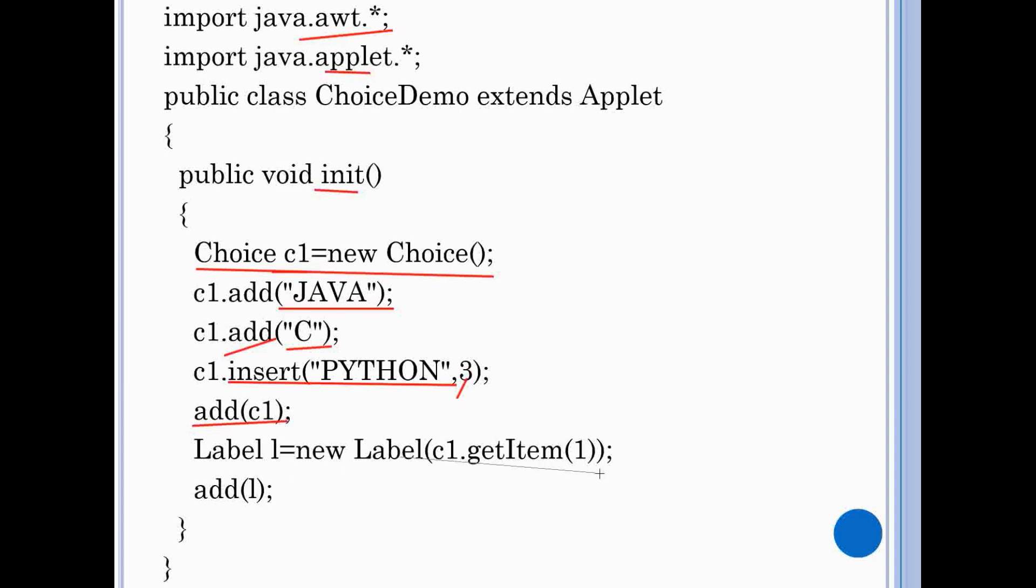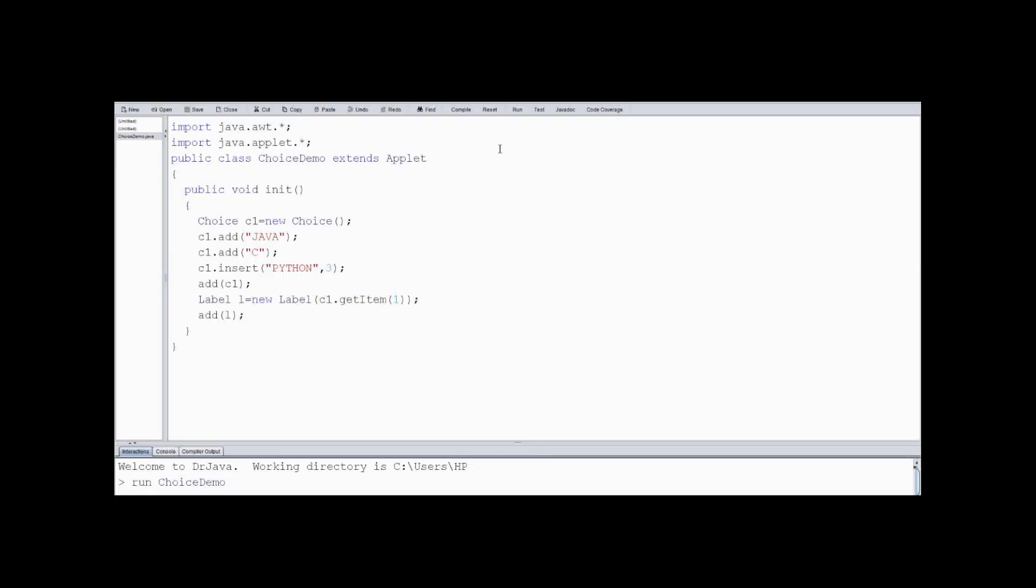Here we use getItem method which returns string present in index 1 and will print this result on the applet with the help of label class. Here we add label to the applet window. Let's compile and run this program.